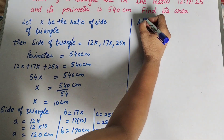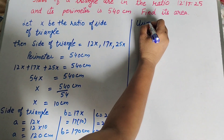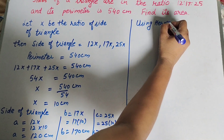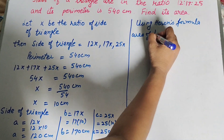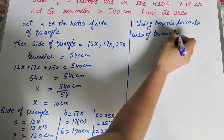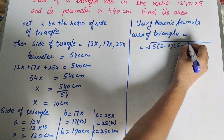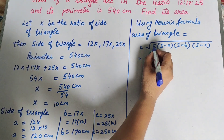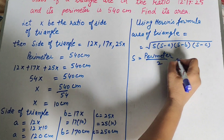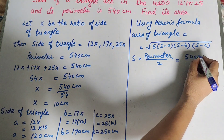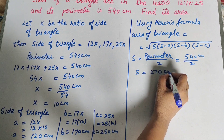Now we find the area of the triangle using Heron's formula. Using Heron's formula: area equals square root of S(S minus A)(S minus B)(S minus C), where S is the semi-perimeter. To find the semi-perimeter, we divide the perimeter by 2. The perimeter is 540 centimeters, so S equals 540 divided by 2, which equals 270 centimeters.